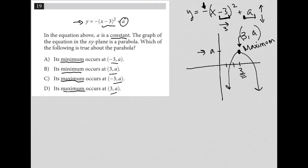And this is why the actual value of A doesn't matter. If instead I said A was down here, my parabola would start here and go down. And again, my vertex would still be 3 comma A.